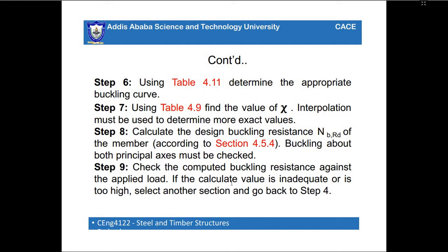Step 6: using Table 4.11 from EC3 1995, determine the appropriate buckling curve. Step 7: using Table 4.9 from EC3, find the value of reduction factor χ — interpolation must be used to determine a more exact value when it does not directly fit the numbers in the table. Step 8: calculate the design buckling resistance. Step 9: check the calculated buckling resistance against the applied load. If the value is inadequate or too high, select another section and go back to Step 4.